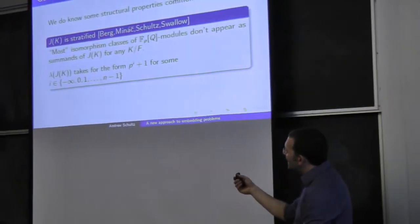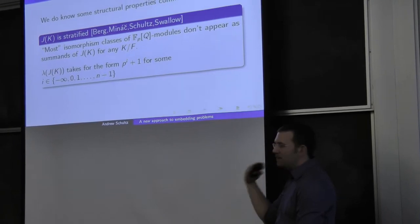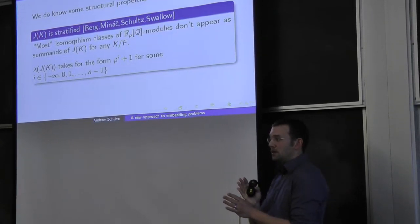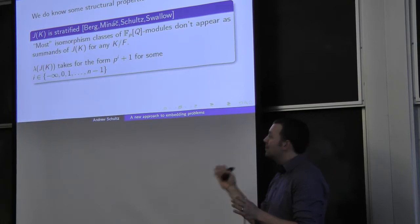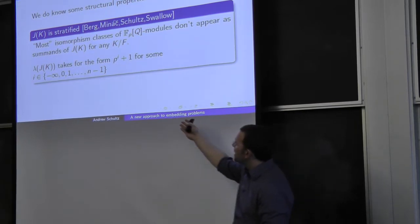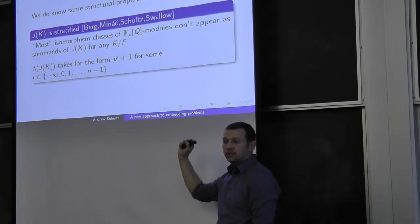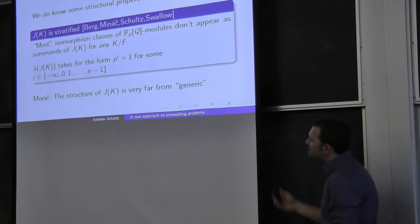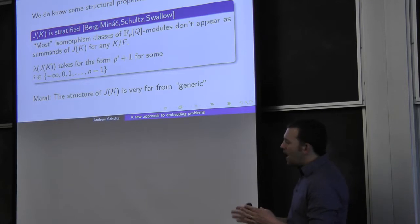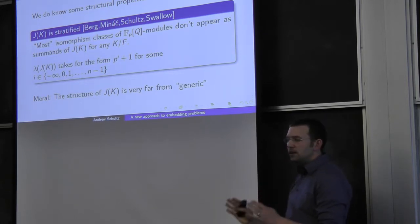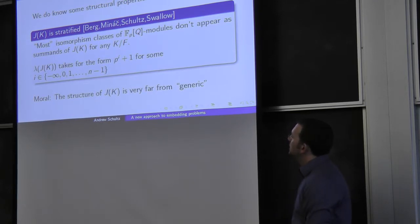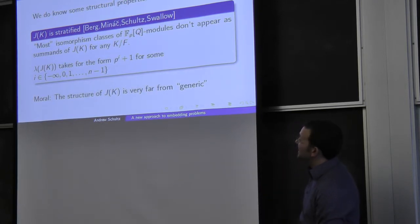Most isomorphism classes simply do not appear in the structure of any J of K. And this invariant lambda also takes a very prescribed form — it could be anything between 1 and p to the n, but it turns out it has to look like 1 more than a power of a prime. Altogether, the structure of J of K for an arbitrary K is really, really non-generic; it has very special properties.